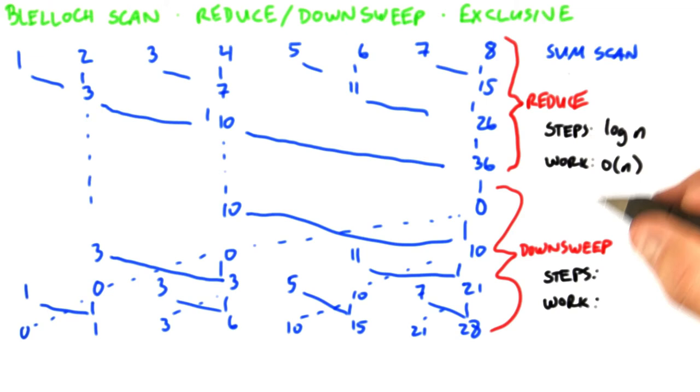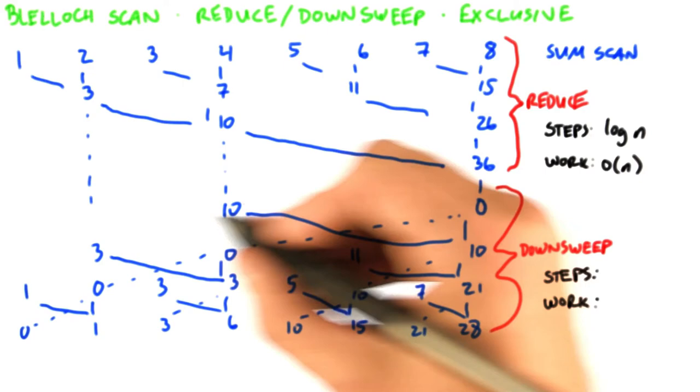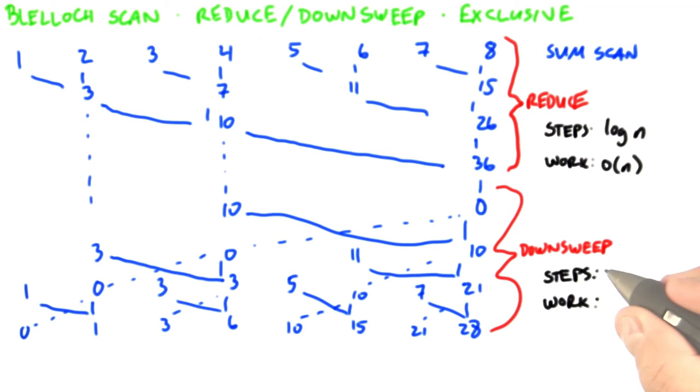And the analysis for the down sweep phase is exactly the same as the analysis for the reduce phase, because the communication pattern here is exactly the same except mirror imaged as the communication pattern here. So we know the down sweep also has log n steps and a linear amount of work.